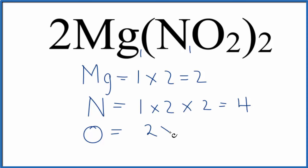For the oxygen, we have two times this two out here times our coefficient, two. So two times two is four times two. Eight oxygen atoms. If we add all of this up, eight plus four plus two, we have a total of 14 atoms in the 2Mg(NO2)2. This is magnesium nitrite.